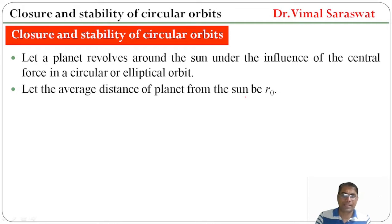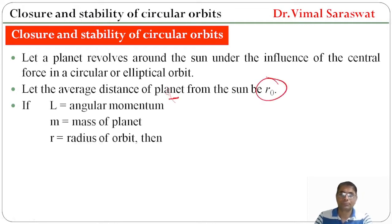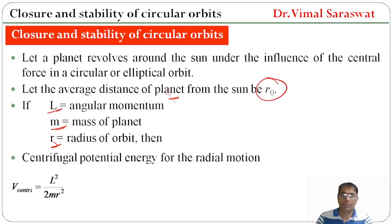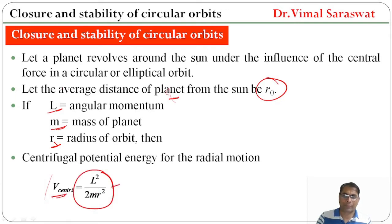Let the average distance of the planet from the sun be r₀. If l is the angular momentum, m is the mass of the planet, and r is the radius of the orbit, then the centrifugal potential energy for the radial motion will be V_centrifugal = l² / (2mr²).